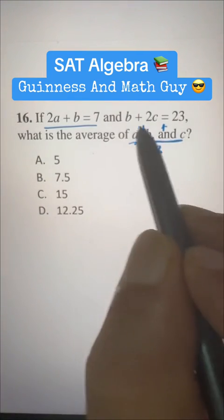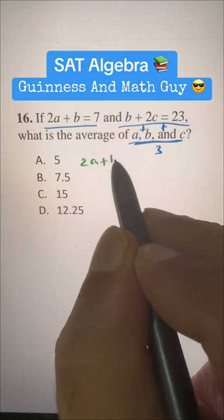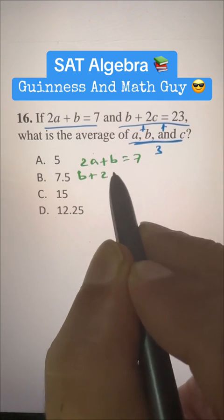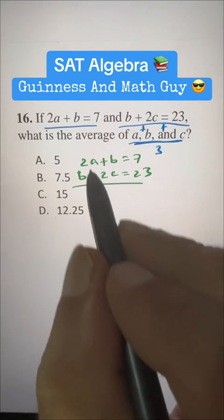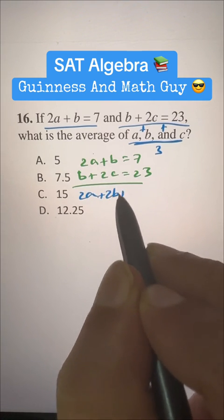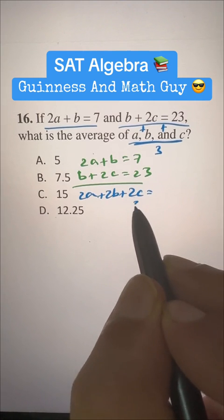Okay, if we add these two equations, 2A plus B is equal to 7 and B plus 2C is equal to 23, we have 2A plus 2B plus 2C is equal to 23 plus 7 is 30.